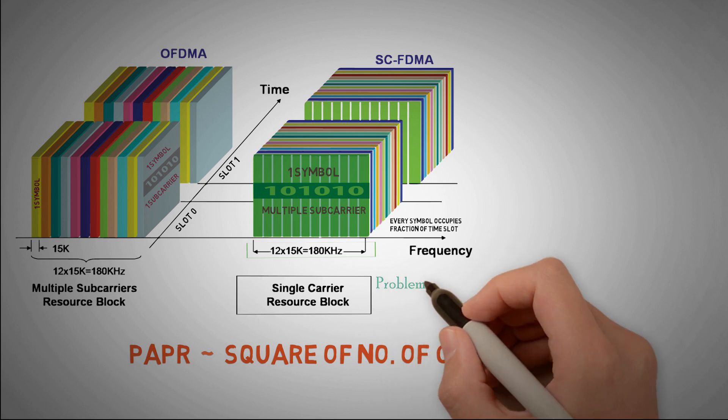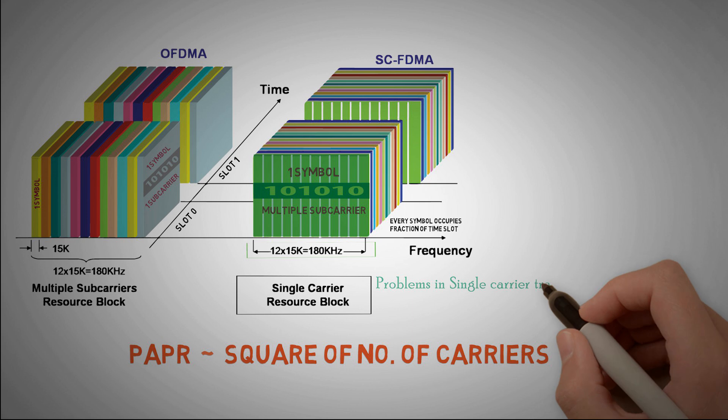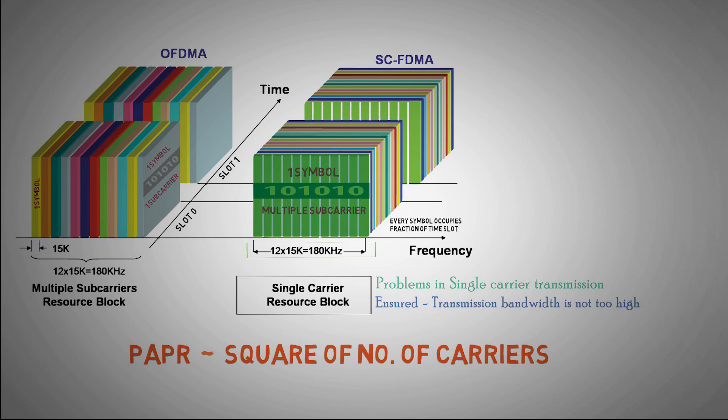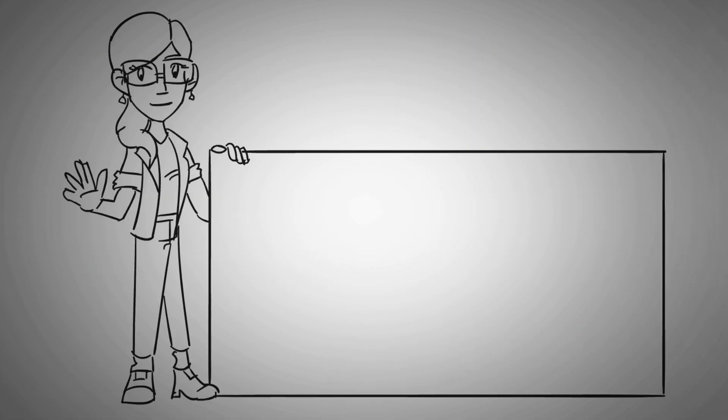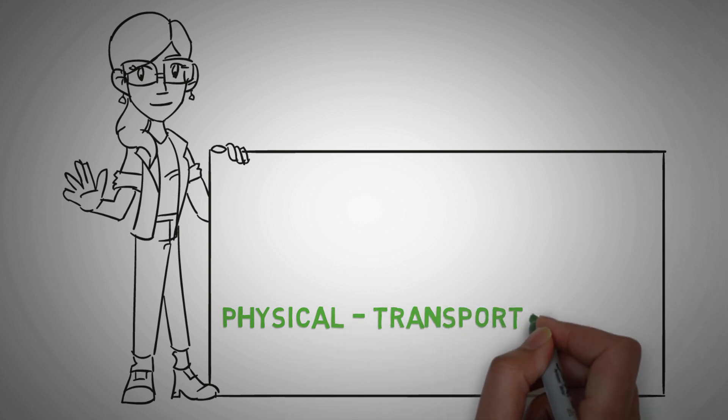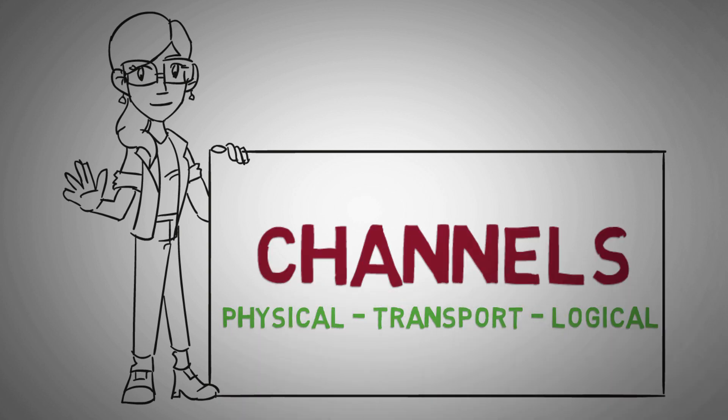Obviously, there are problems in single carrier transmission as we discussed earlier, but the side effects are reduced by ensuring that the total bandwidth over which a symbol is transmitted is still not too high. Apart from this, remaining blocks in the uplink direction are same as used in downlink direction. In our next video, we will be talking about physical, transport and logical channels used in long-term evolution.